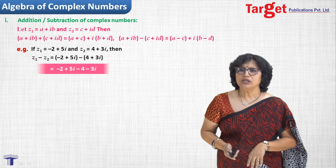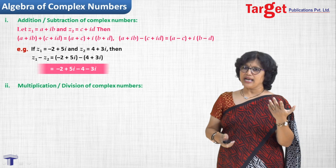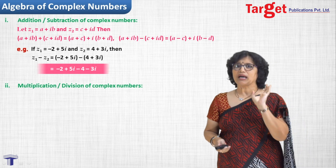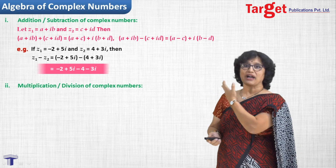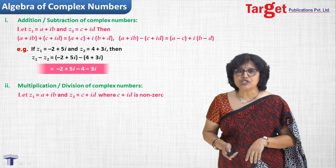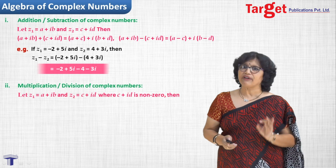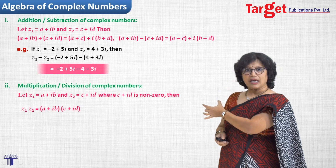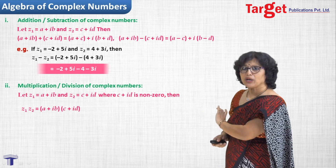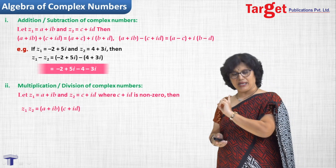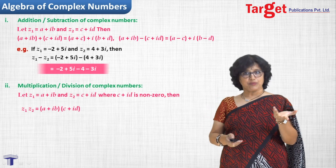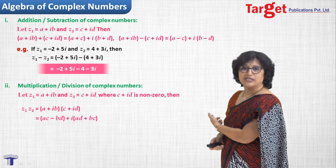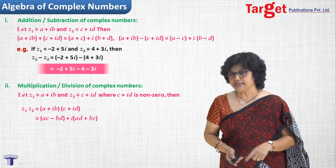We now go further for multiplication and division. For multiplication, we multiply term by term: z1 times z2 equals (a plus ib)(c plus id). Wherever i squared appears, it is replaced by minus 1, and after simplification the answer is (ac minus bd) plus i times (ad plus bc).